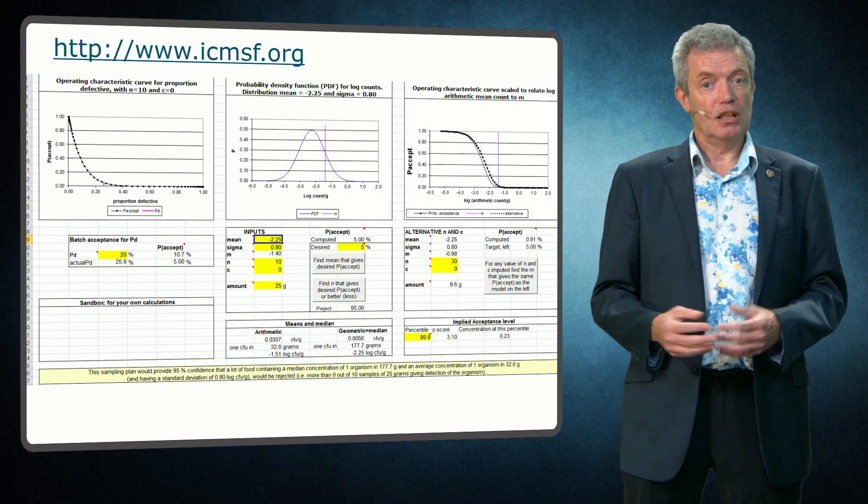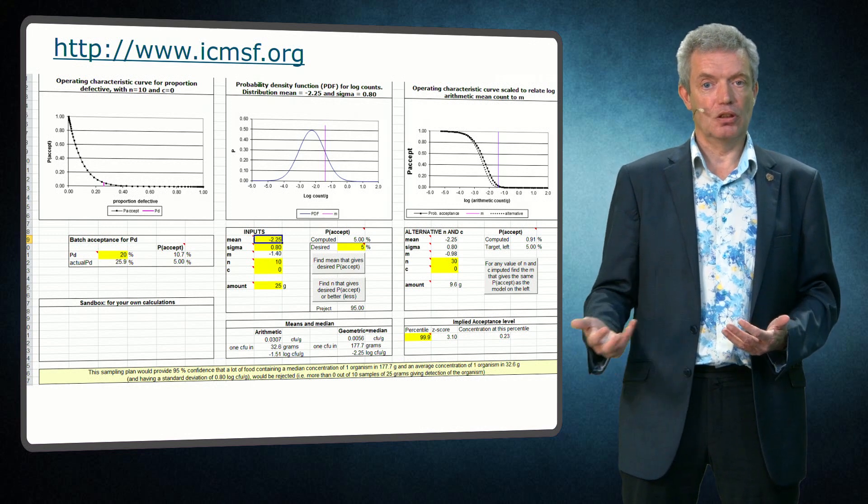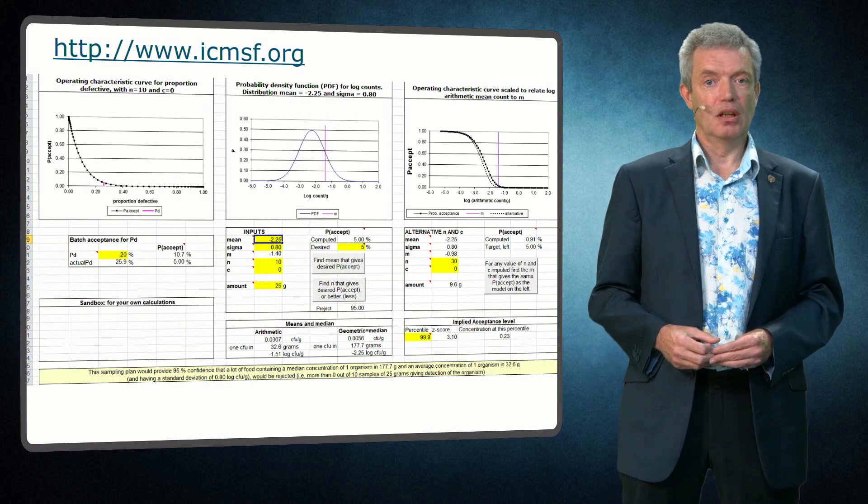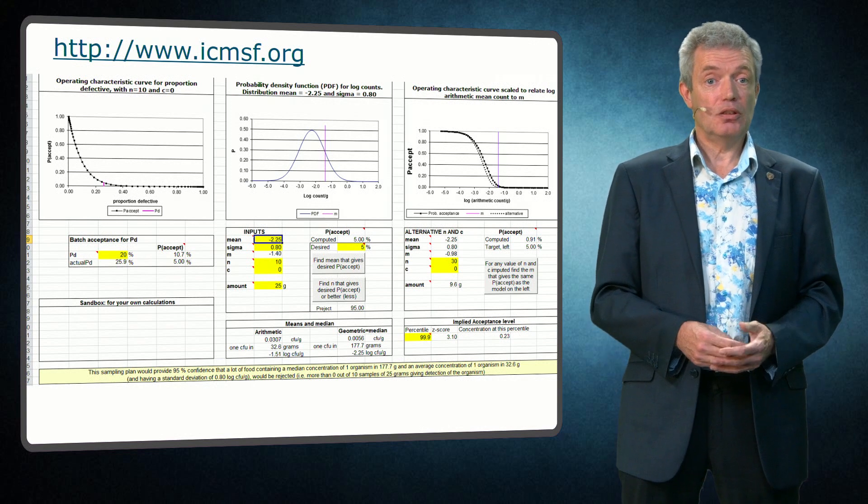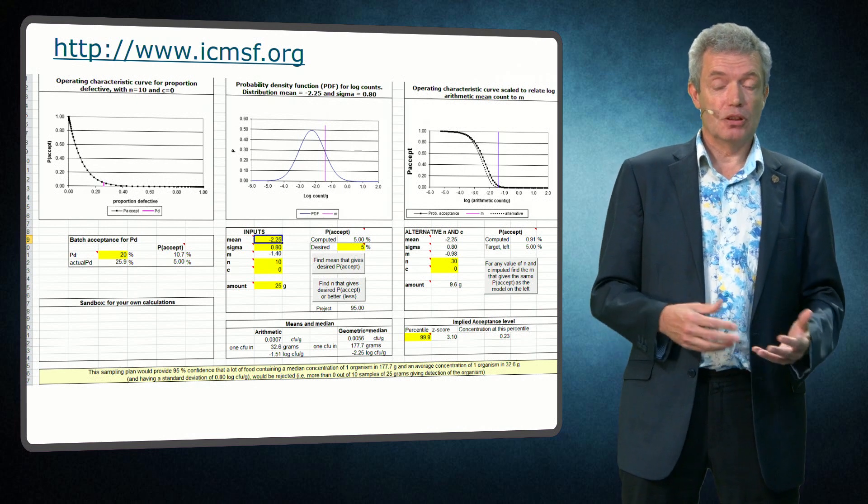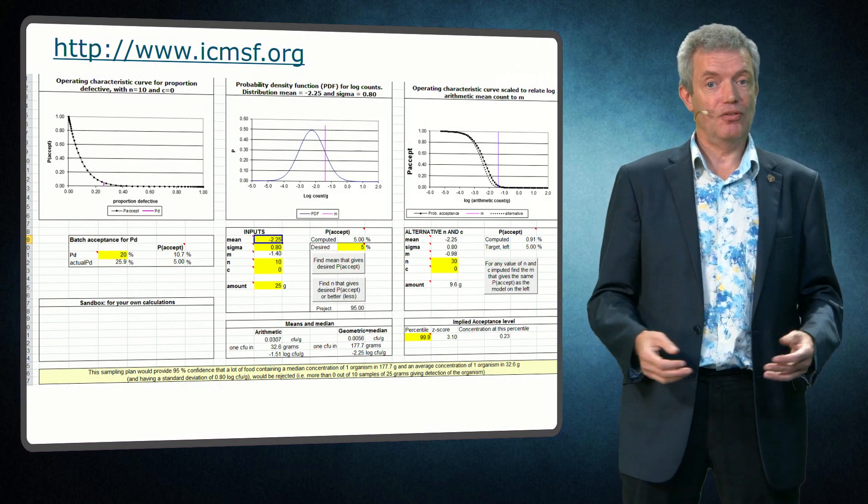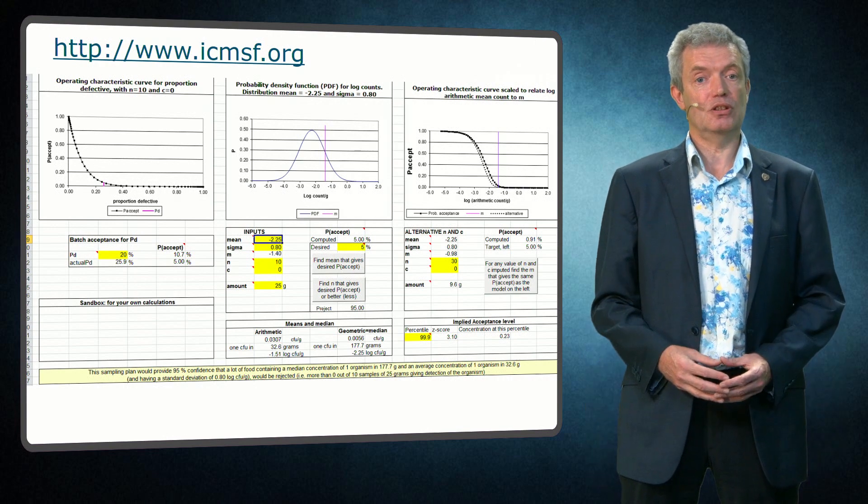When you input your data in the ICMSF spreadsheet, it will automatically produce an interpretation sentence about the performance of the sampling plan. There are sheets for absence and presence tests and for quantitative tests, and both for 2 and 3 class sampling plans. Furthermore, for absence presence tests it is also possible to investigate the effect of specificity and sensitivity on the performance of the sampling plans.